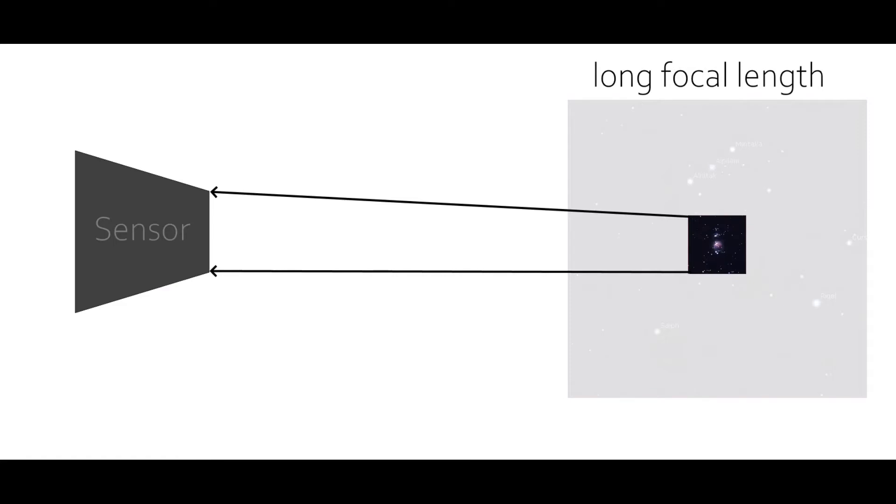But if you then use a longer focal length but fix the aperture, then you project a smaller patch of the sky with less light onto the same chip and hence get a lower luminosity. So images tend to get darker if you increase the focal length but fix everything else.